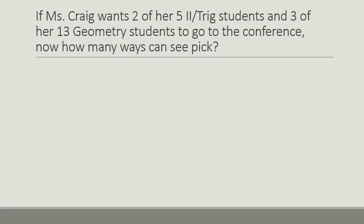So let's assume that I want just 2 of my 5 algebra 2 trig kids to go and 3 of my 13 geometry kids. So to pick my 2 algebra 2 trig kids, it would be 5 combinations 2 at a time. To pick my 3 geometry, it would be 13 combinations taken 3 at a time. So using my calculator, 5 combinations taken 2 at a time is 10. 13 combinations taken 3 at a time is 286. And if I multiply that together, I get 2,860 different ways to go.